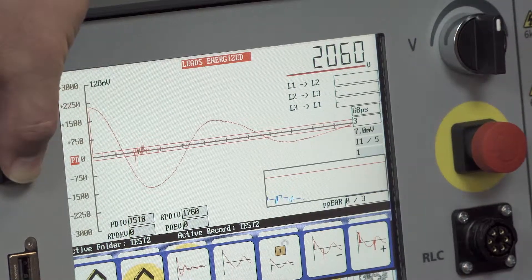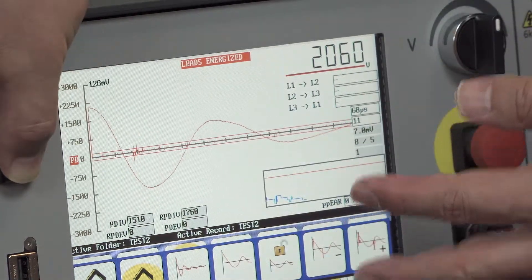Okay, 2,000 volts, stopped the test. Now this is where surge testing is a little bit different with PD.